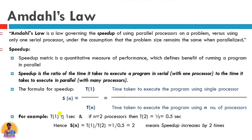So our answer is 0.5 seconds with 2 processes. That means with 1 processor it was 1 second, and with 2 processors it is 0.5 seconds — the time halved. The speed up S(n) = T1 / T(n) = 1 / 0.5 = 2. It means speed up increased by two times. So the speed up doubled, and this is the speed up concept that Amdahl's Law explains further.